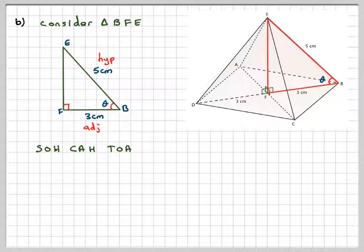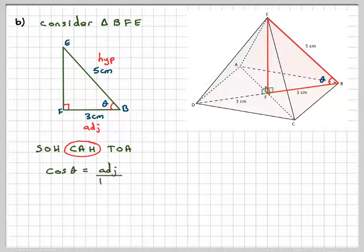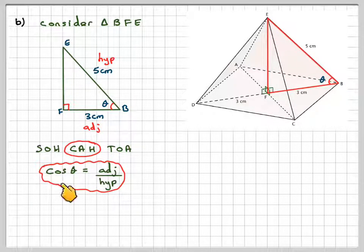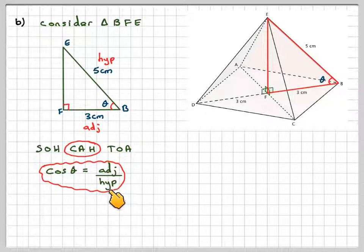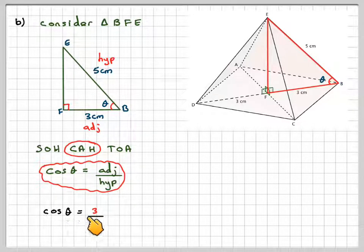Using SOH CAH TOA, which one of these three ratios do we need to use? We've got adjacent, hypotenuse, angle. So that's going to be CAH. So cos theta is adjacent divided by hypotenuse. Cos theta will be the adjacent side, which is 3, divided by 5.